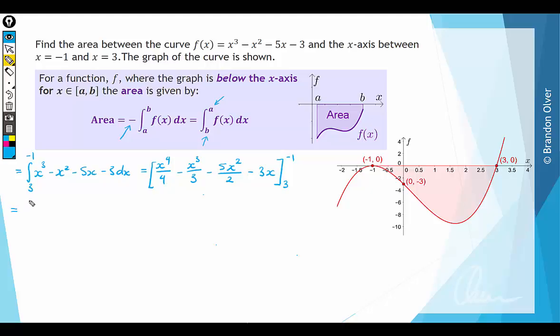So this equals negative 1 to the power of 4 divided by 4, minus negative 1 to the power of 3 divided by 3, minus 5 times negative 1 squared over 2, minus 3 times negative 1.